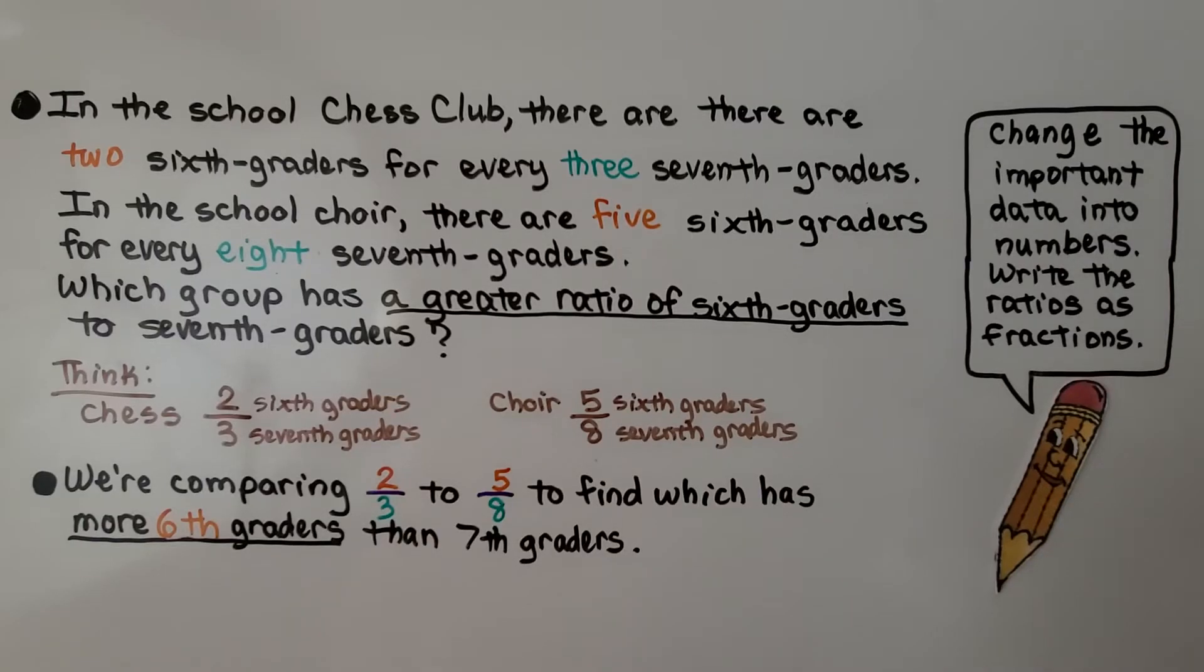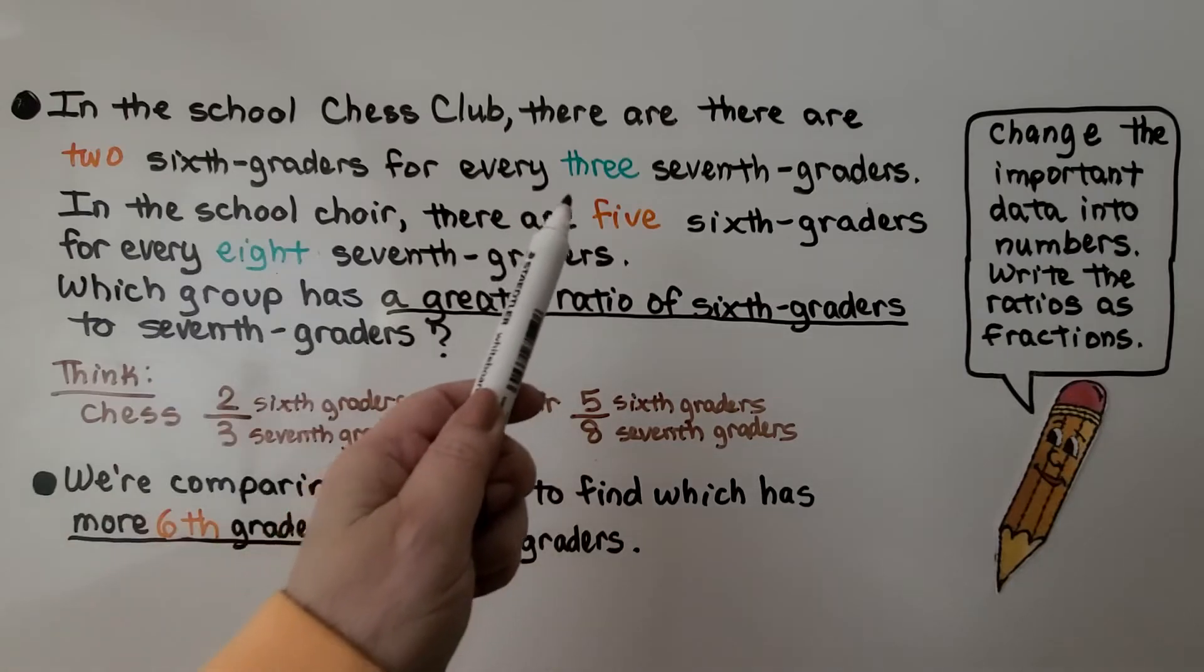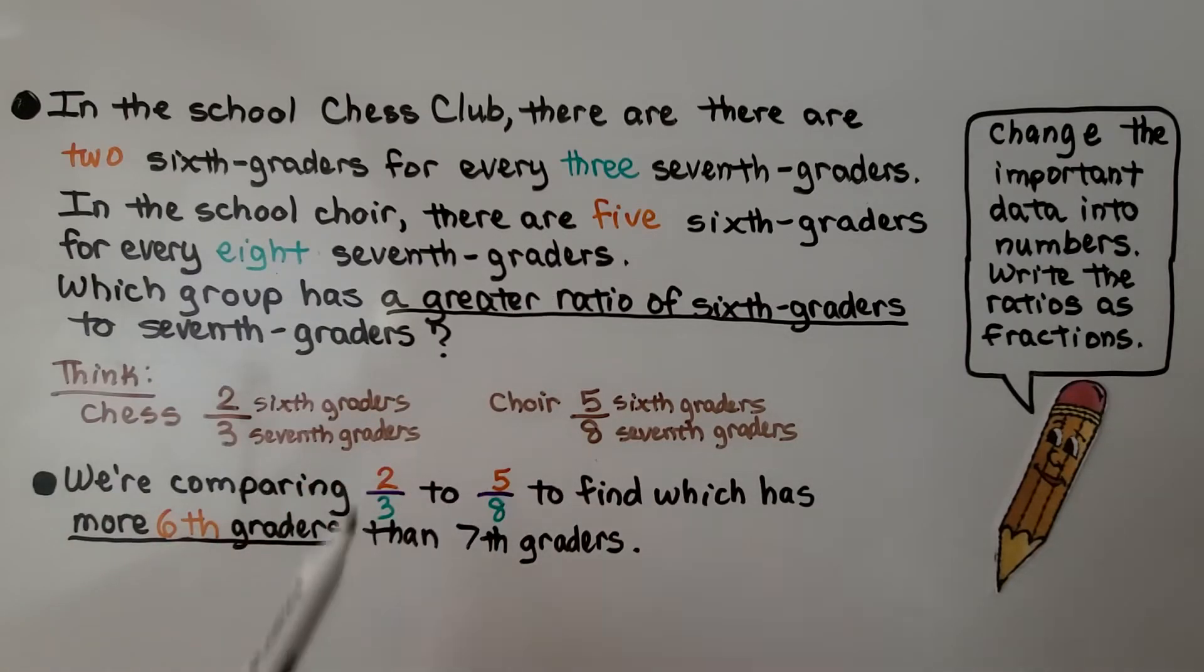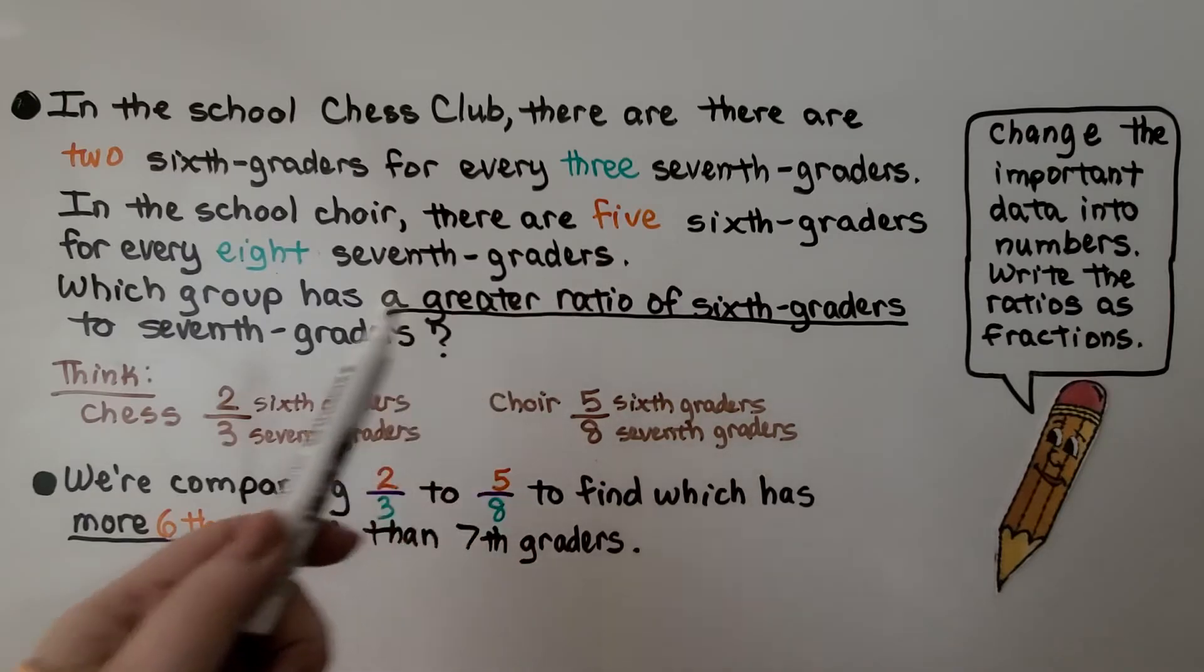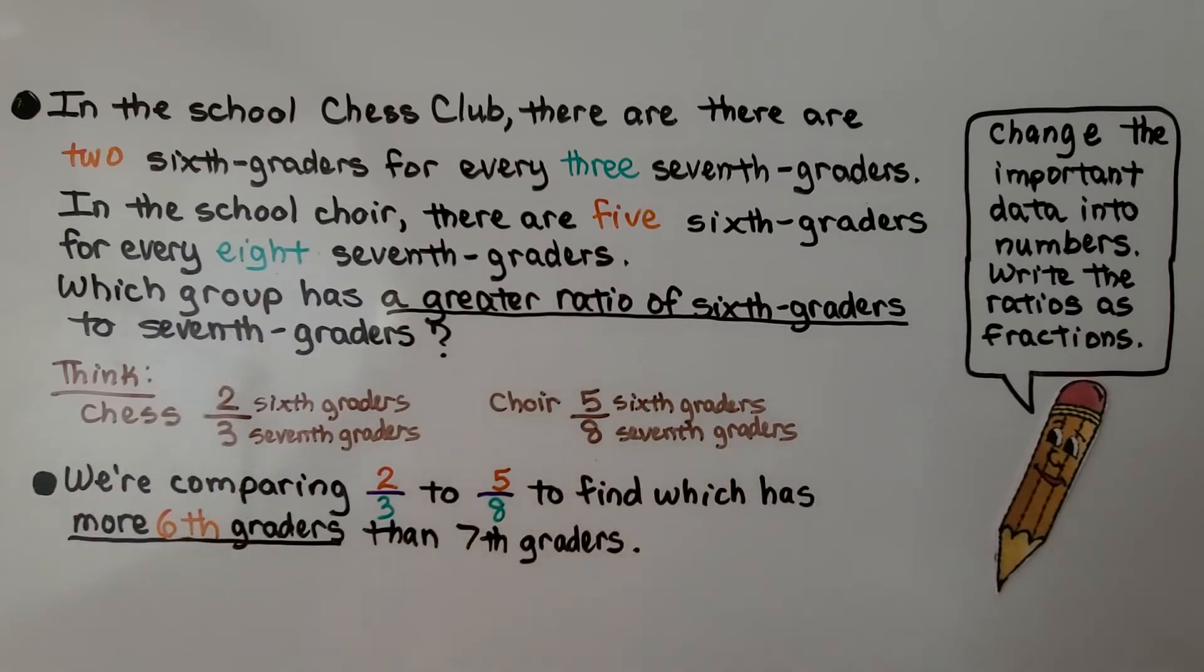In the school chess club, there are 2 sixth graders for every 3 seventh graders. In the school choir, there are 5 sixth graders for every 8 seventh graders. Which group has a greater ratio of 6th graders to 7th graders? When we think chess, that's 2 sixth graders to 3 seventh graders, that's 2 thirds, and choir is 5 sixth graders to 8 seventh graders. We change the important data into numbers and write the ratios as fractions. That means we're comparing 2 thirds to 5 eighths to find which has more 6th graders than 7th graders.